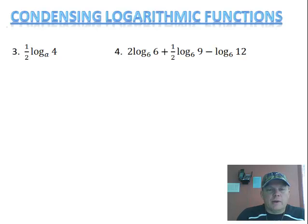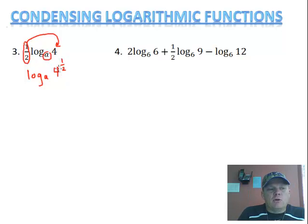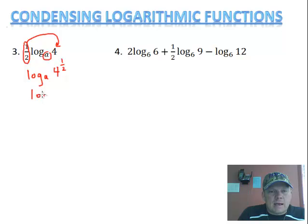Now I've got example 3. I'm going to keep log base a, and I have this coefficient out here I'm going to put as the exponent for the 4. So I'm going to rewrite this as log base a of 4 to the 1 half power. The 1 half power is the same thing as taking the square root. Basically this just gives you log base a of square root of 4, which is just 2. So there's our condensed version.